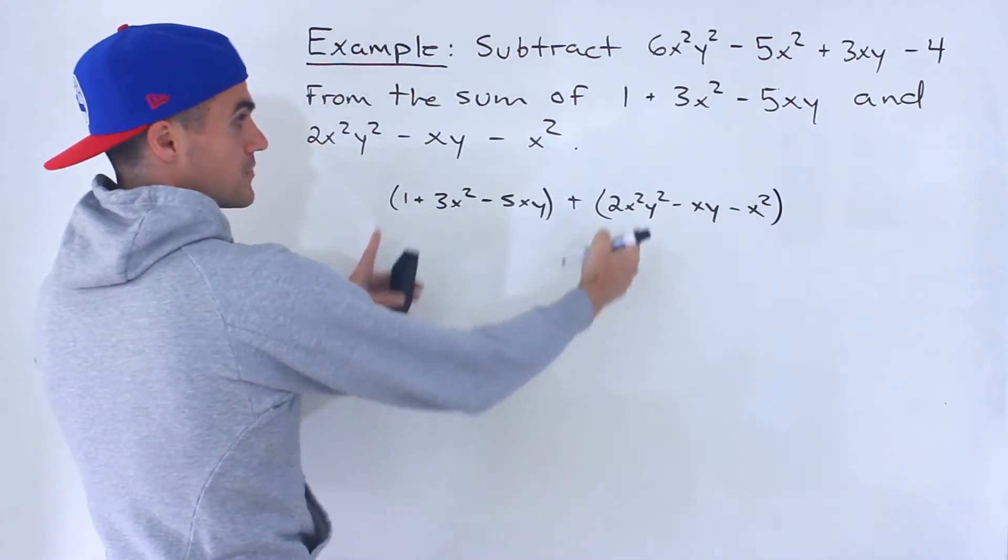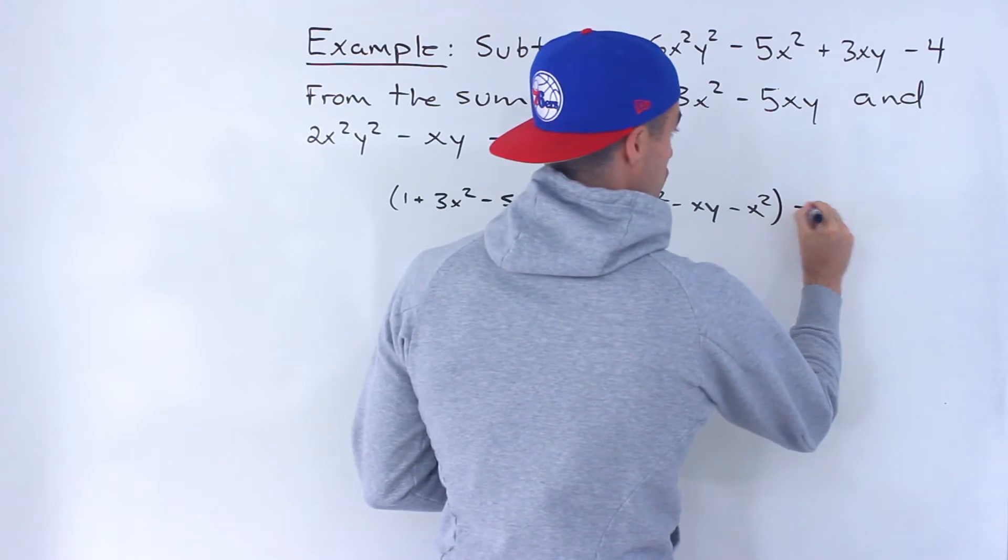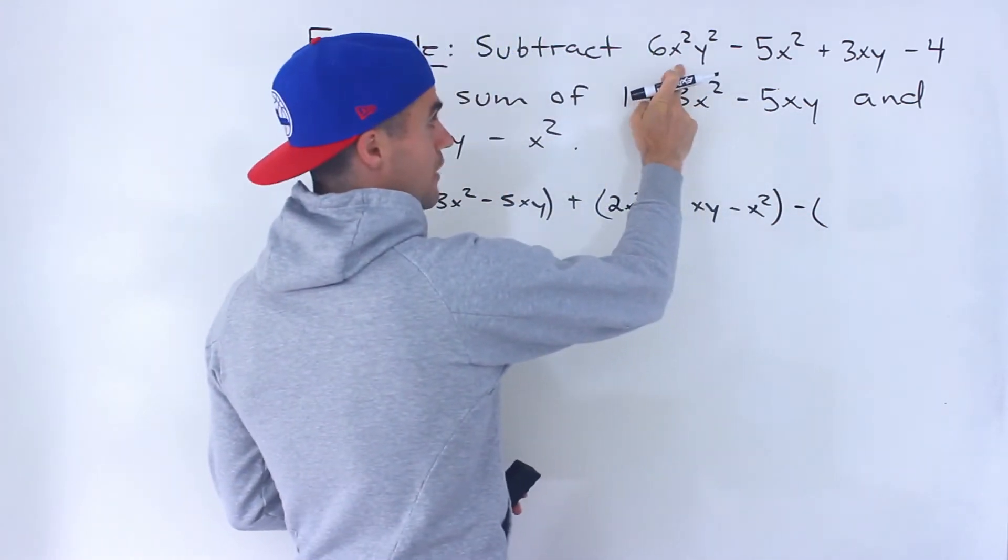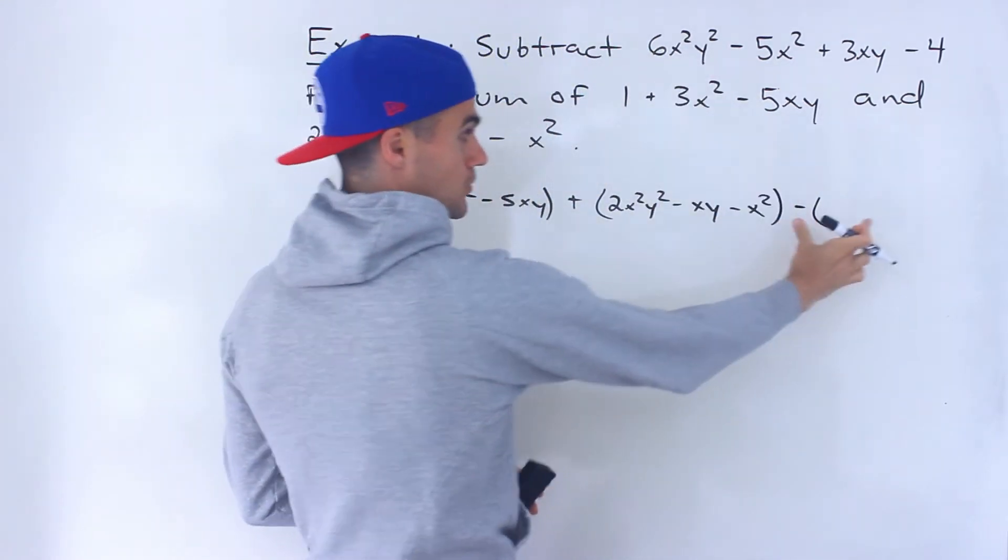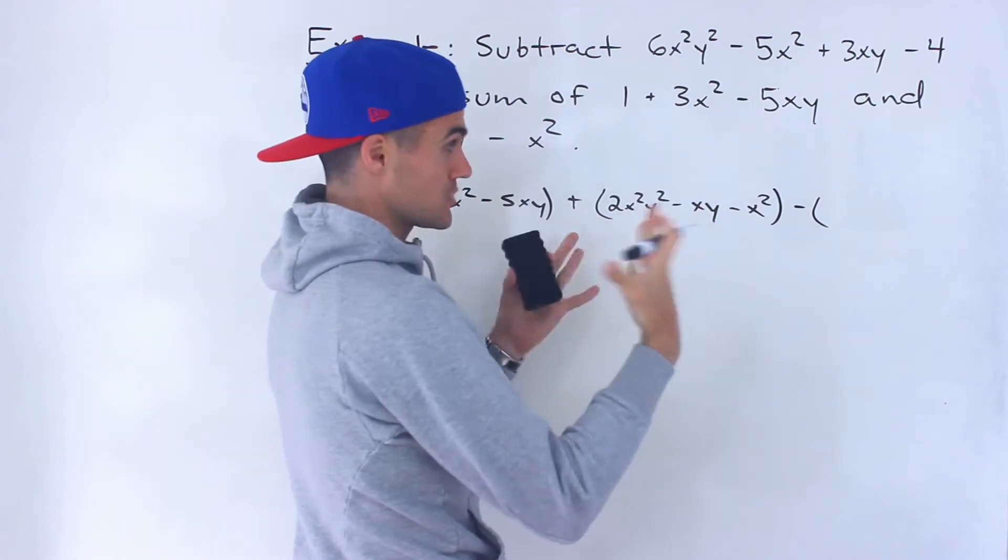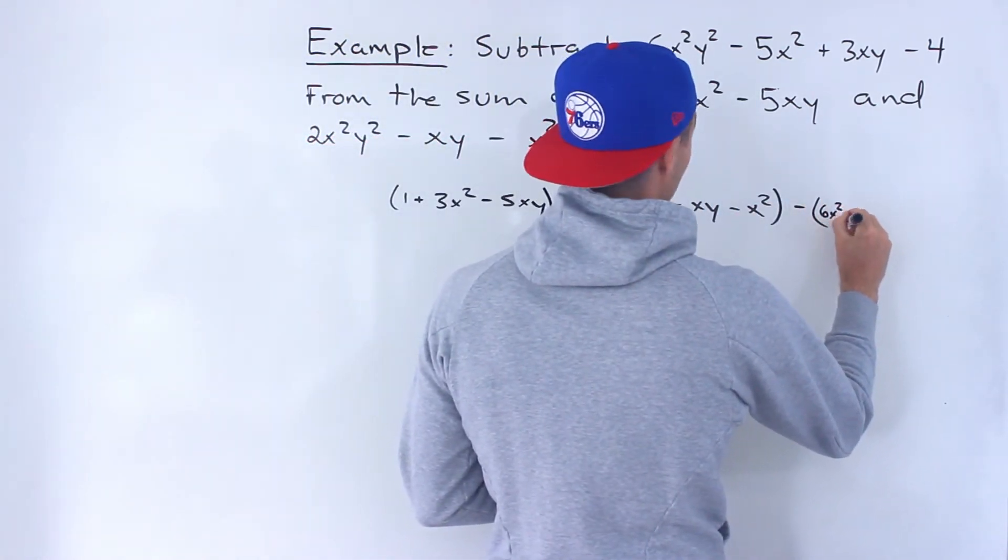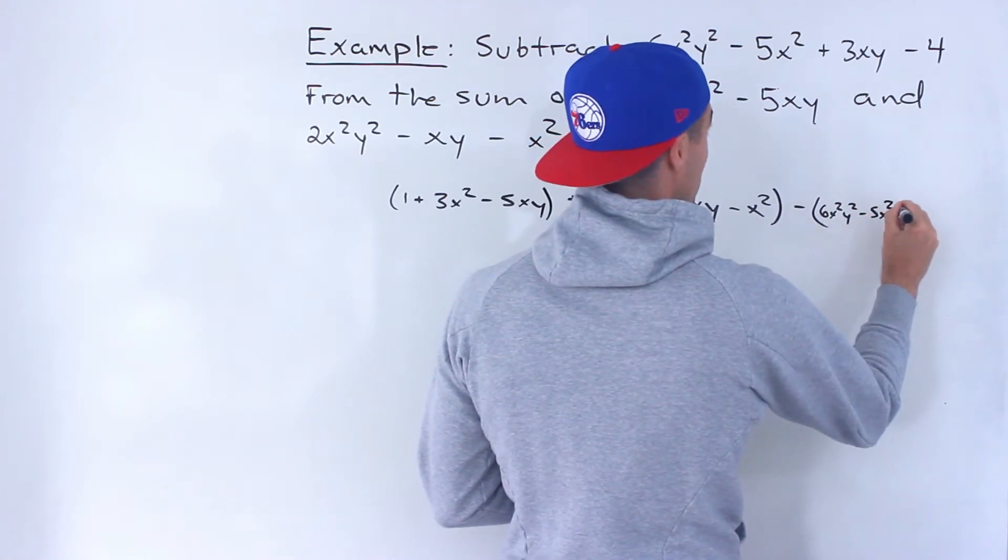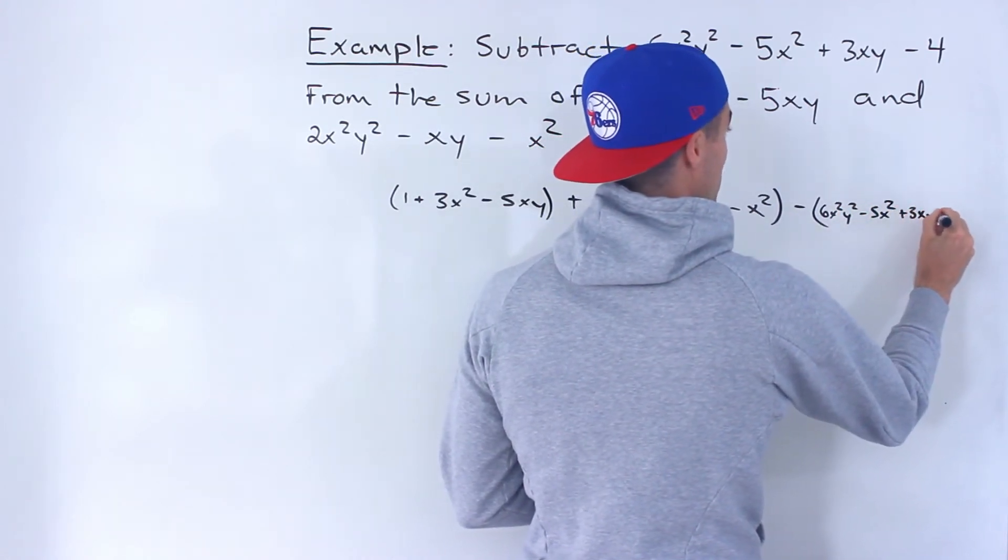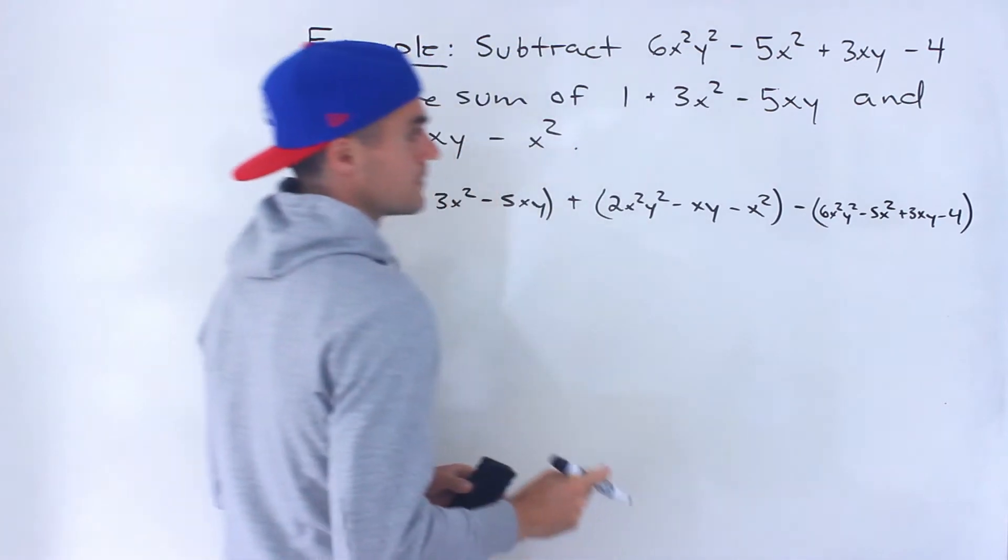And then from the sum of this, what we're doing is we're subtracting this expression. And this expression, you want to put that in brackets. We're subtracting that whole thing. So we're going to have (6x²y² - 5x² + 3xy - 4).